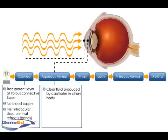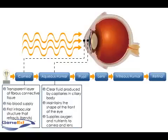The physiologic functions of aqueous humor are to maintain the shape of the front of the eye, and to supply oxygen and nutrients to both the cornea and the lens.